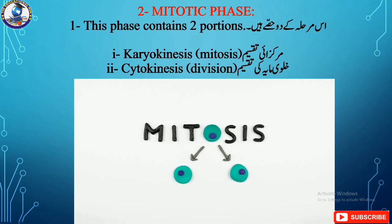Now moving towards the second major phase of the cell cycle, which is the mitotic phase. Mitotic phase contains two portions: the first one is karyokinesis, which is basically the division of the nucleus, and the second stage is cytokinesis, which is basically the division of the cytoplasm.